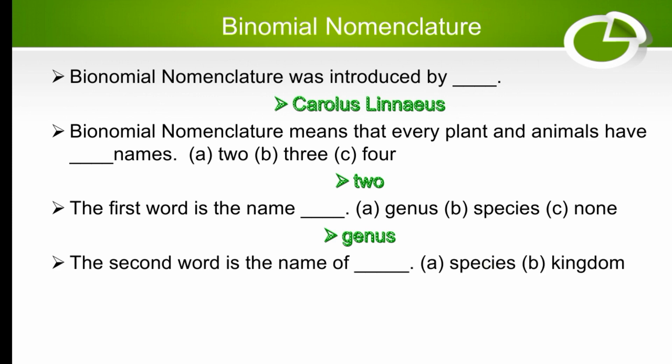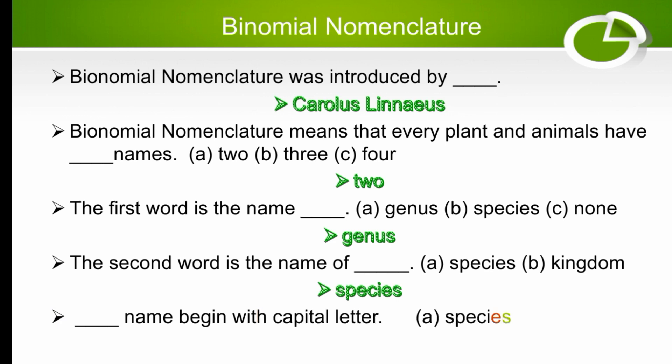In two names, one is the genus name and the other is the species name. The second word is the name of the species. The generic name always begins with a capital letter — the right option is generic name.